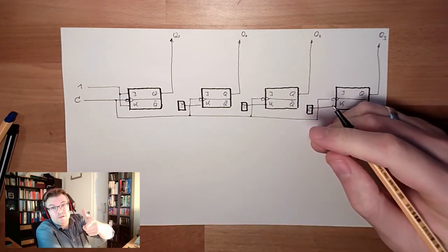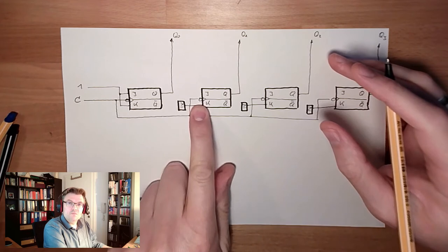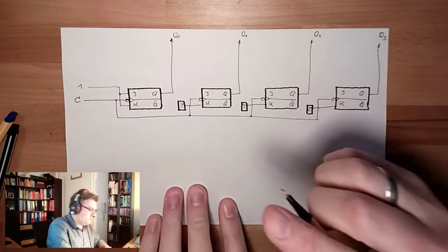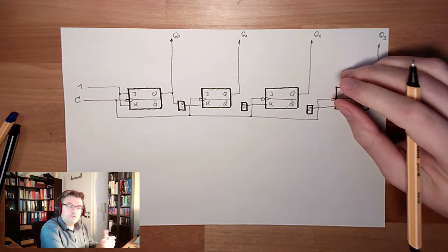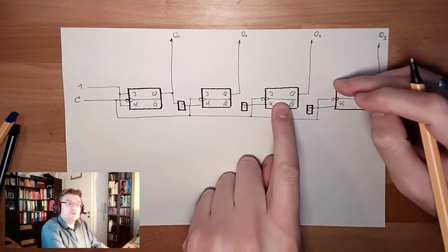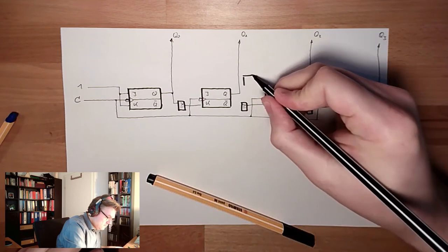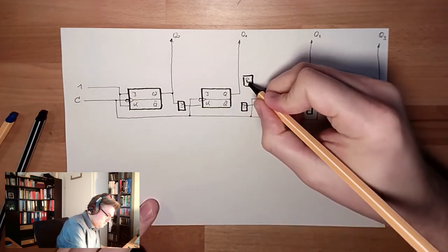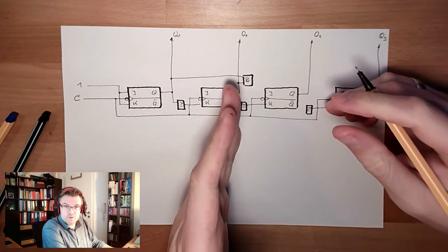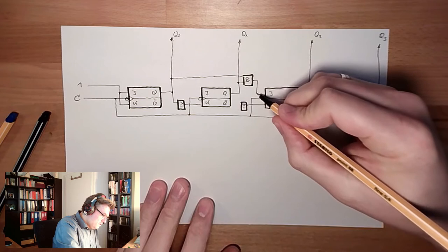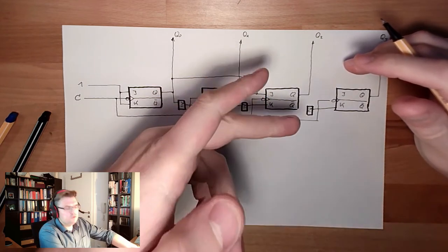The second one shall toggle every time this is one. Then the other one shall toggle, because this means I'm done with the previous ones, like we've discussed in numbering systems. The next one shall toggle if this and this are one. So I need an AND here. And if this and this both are one, this means I have all possible combinations before. I'm using the next, so I'm setting J and K to one and this will toggle with the next one.